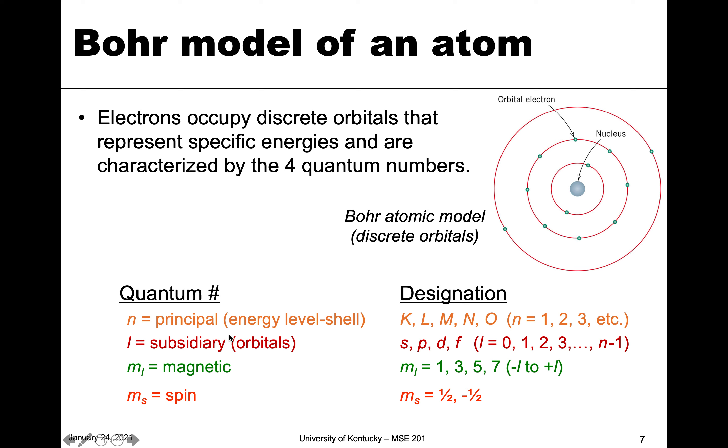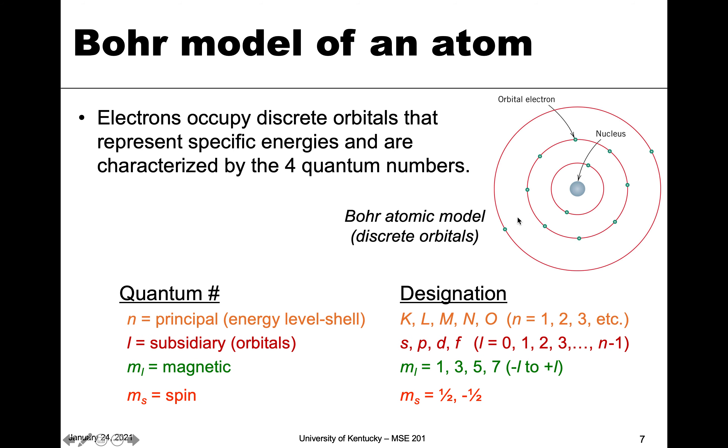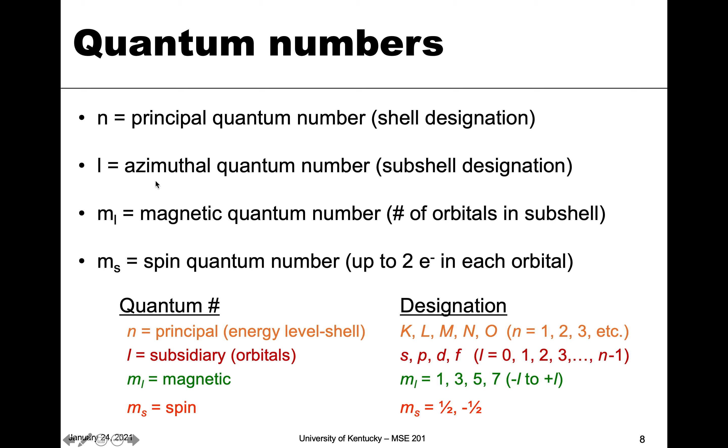Then you have others: l, which defines the various orbitals; m sub l, which is the magnetic quantum number; and m sub s, the spin number. All of these define the energy level of a single electron in this structure. So n is the principal quantum number—this gives you the shell, the various radii from the nucleus. Then l, in the book we call it the azimuthal quantum number, tells us about what we call sub-shells or orbitals in the structure.